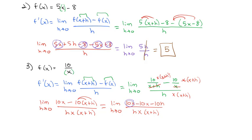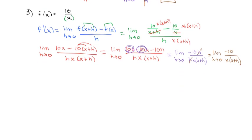The 10x and the 10x subtract to zero, leaving the limit as h goes to 0 of negative 10h over hx(x plus h). We divide out the h's, leaving the limit as h goes to 0 of negative 10 over x(x plus h). Now that we've removed the discontinuity, we plug 0 into h and get negative 10 over x times x, which is x squared. So the derivative of 10 over x is negative 10 over x squared.